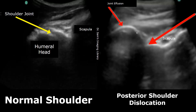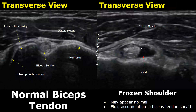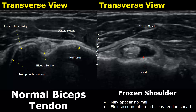This is a case of frozen shoulder, also known as adhesive capsulitis. On ultrasound it may appear normal, but in some cases fluid accumulation in the biceps tendon sheath will be seen. The features are then correlated clinically.